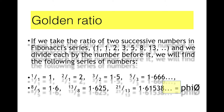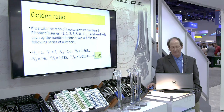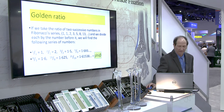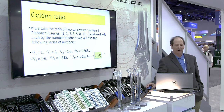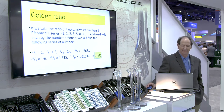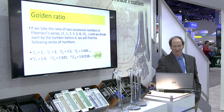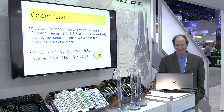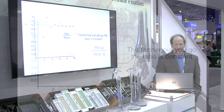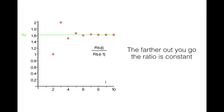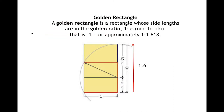Zero plus one is one, one plus one is two, two plus one is three, and so on — that's the Fibonacci sequence. If you take the ratio of successive numbers, dividing each by the number before it: one divided by one, two divided by one, three divided by two, five divided by three — the ratio converges to approximately 1.618. It's kind of like pi, except the golden ratio doesn't get as much public press but probably should.